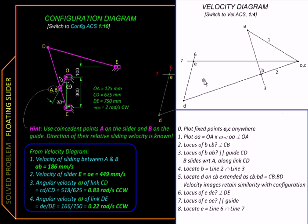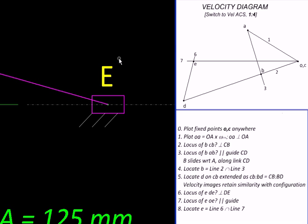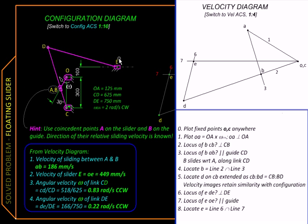Finally, we read off all the linear velocities from the velocity diagram using the scale and list them here. As for the slider, like this slider E, the velocity can be directly applied. So the velocity of the slider E is 449 millimeters per second.